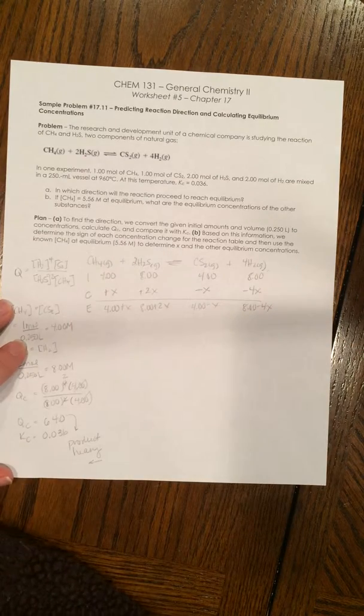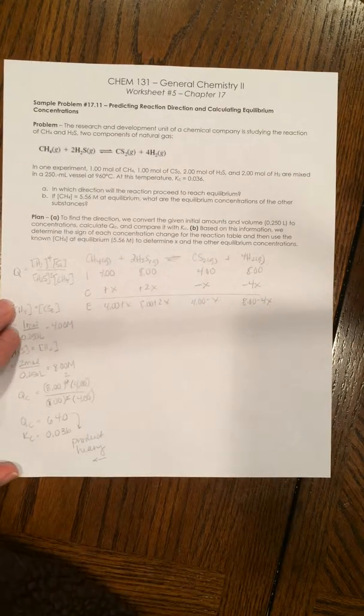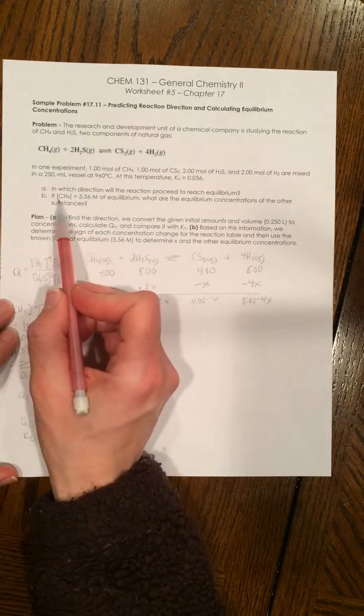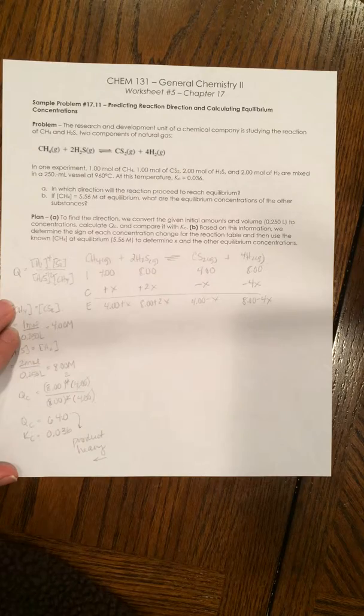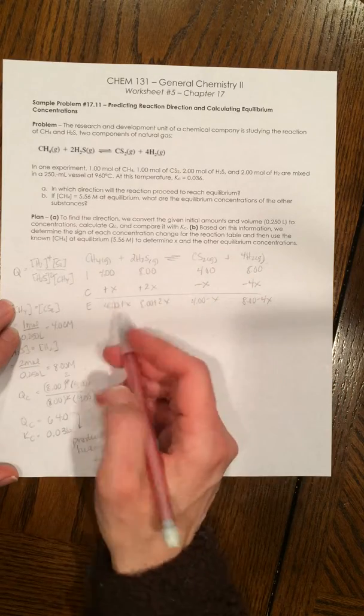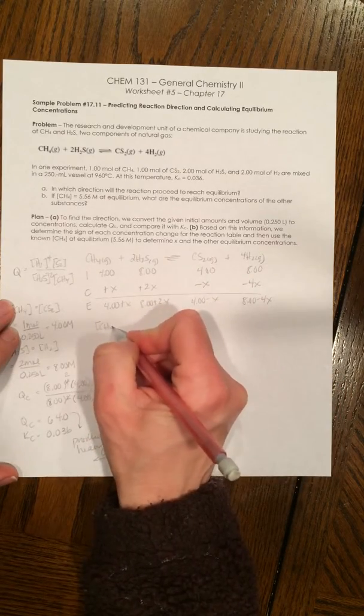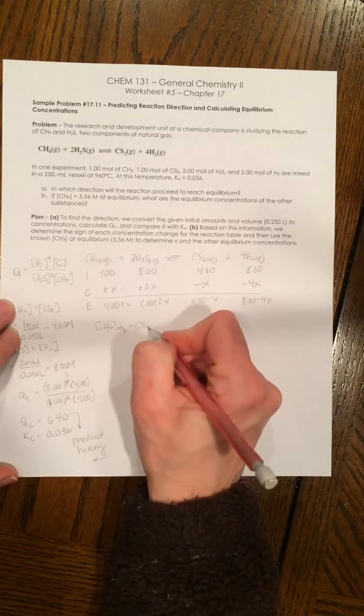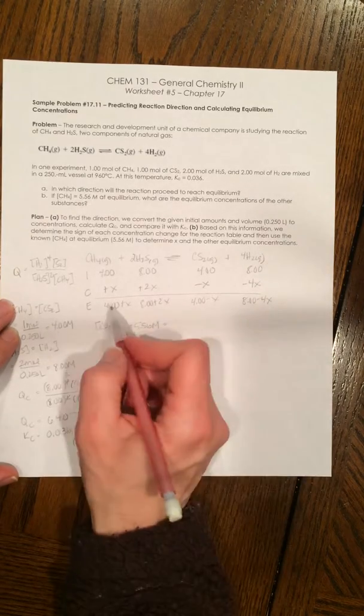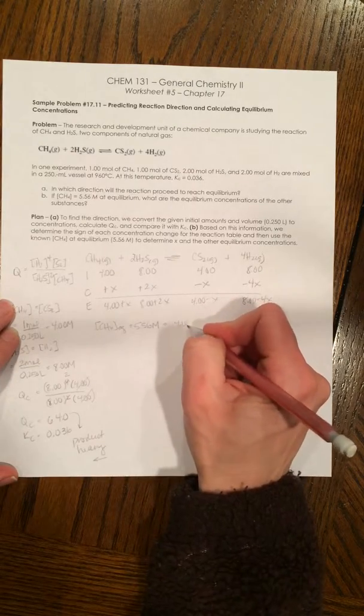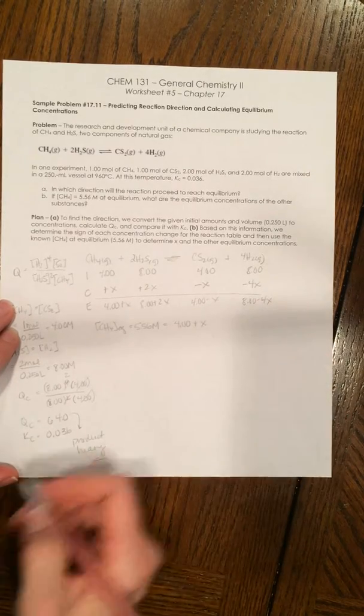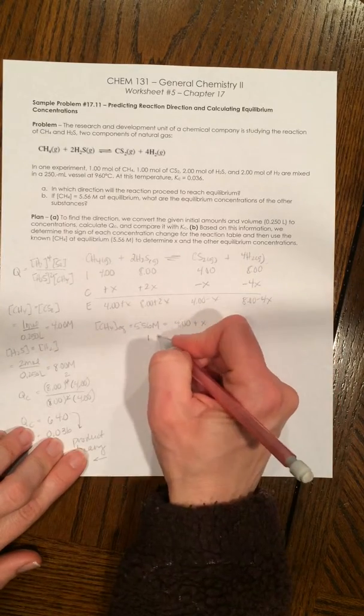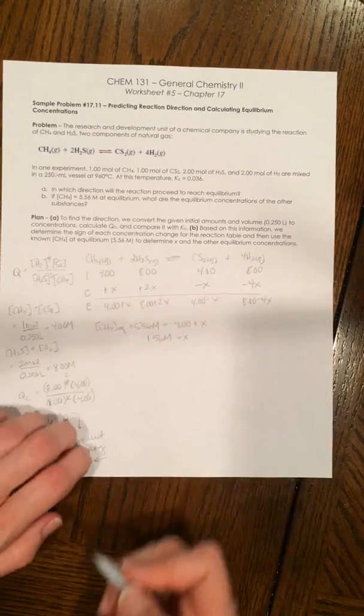This problem at this point became a relatively easy ice table problem because they tell us one of the species concentrations at equilibrium. So in this case, they tell us that the CH4 concentration at equilibrium is equal to 5.56 molar. And we know that we've defined our equilibrium concentration as 4.00 plus X. So in this case, it's relatively straightforward to solve for what X is. And X is 1.56 molar.